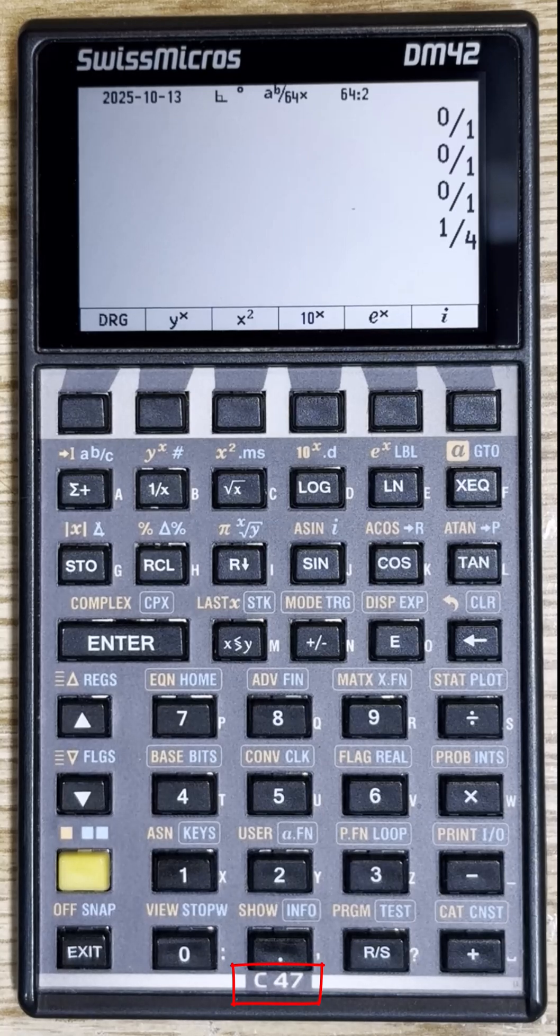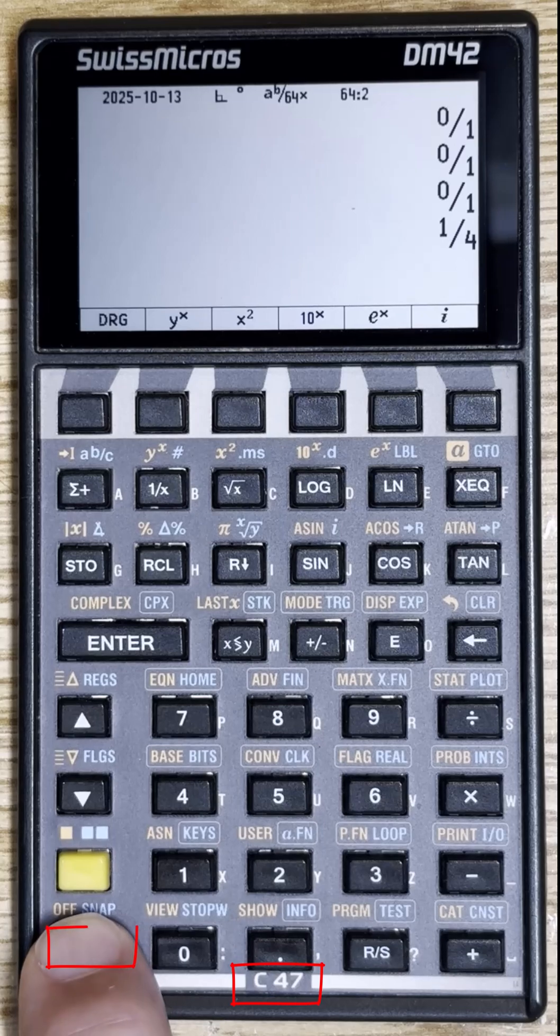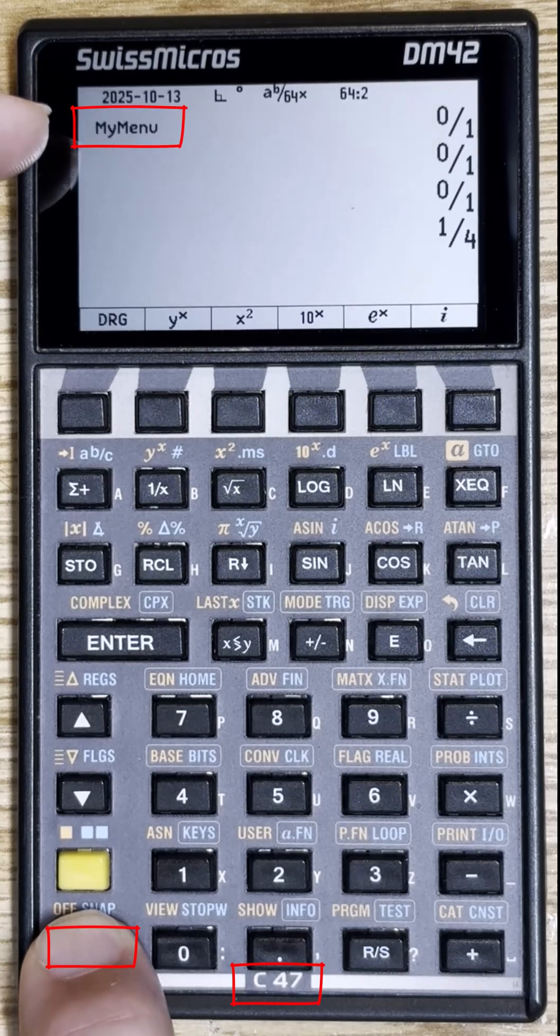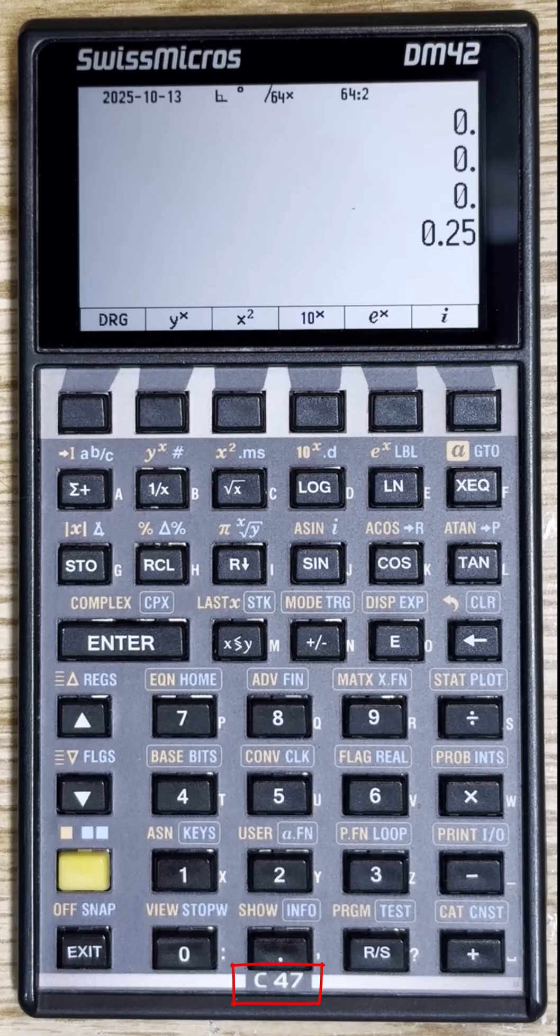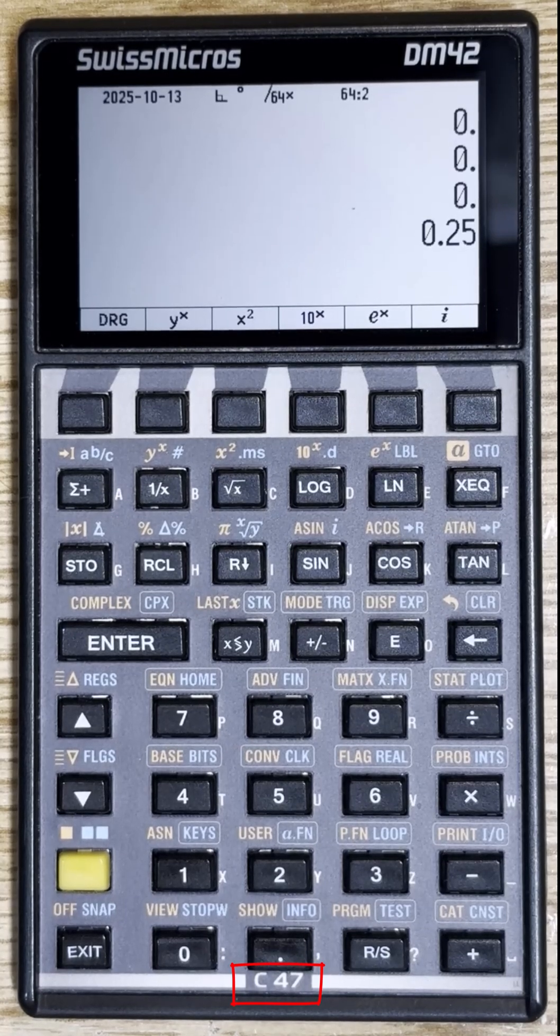And at this point, it's not obvious how to get out of this mode. One trick to remember is that you can press and hold the exit key and wait until the clear mode operation shows up on the screen, and that will exit all the operating modes and return to the normal calculator operation.